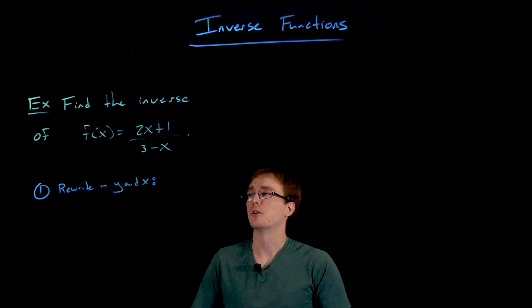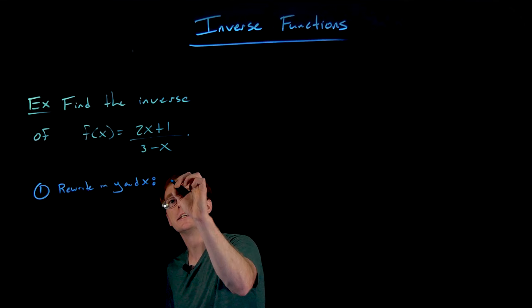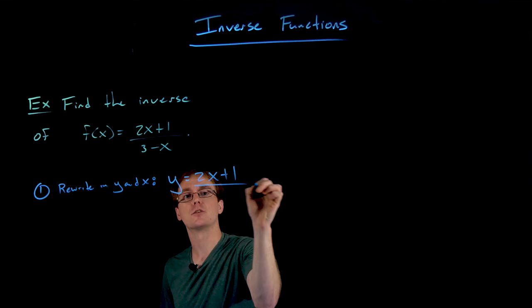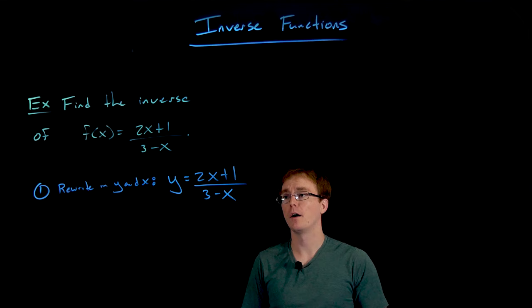So in terms of x and y or y and x, our function is y is equal to 2x plus 1 divided by the quantity 3 minus x.